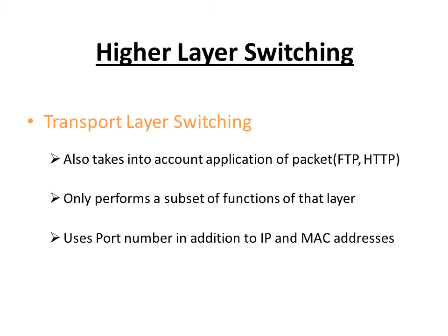At the higher layer switching, layer 4 switches are capable of identifying which application protocols are included with each packet, and then use this information to send the packet. Layer 4 switches make decisions by taking into account the application to which the packet belongs — such as HTTP or FTP — and also note the port numbers. These switches implement only a subset of the functions of a layer; they don't perform all the functions of that layer.